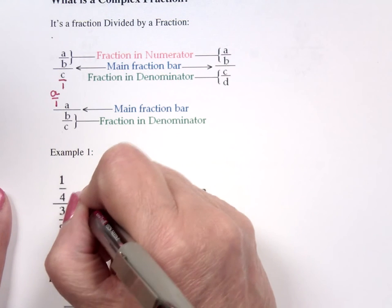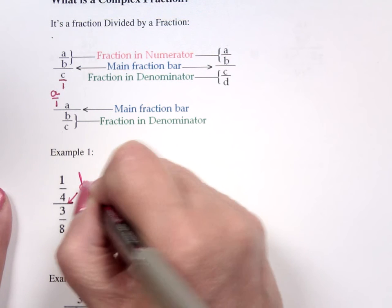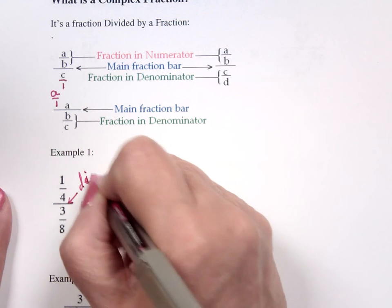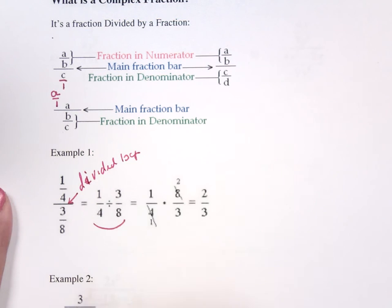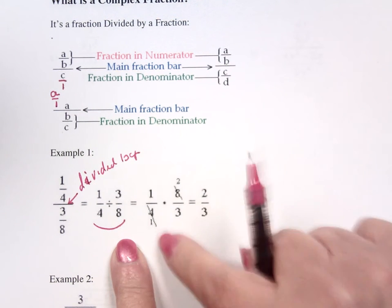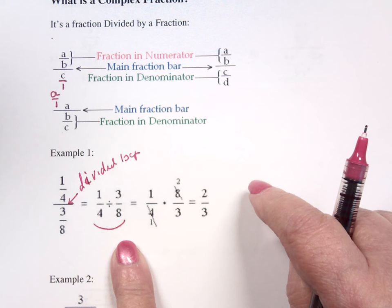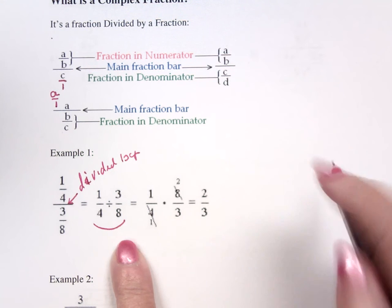1 fourth. The main division bar means divided by 3 eighths. And we know how to work that problem. We just invert and multiply, factor and reduce.